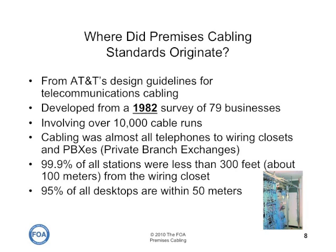Standards for premises cabling were developed from a 1982 AT&T survey of a number of businesses. AT&T was interested in what was going to happen when they went from POTS — plain old telephone service, analog phones — to digital private branch exchanges and digital phones. In their survey, practically all of the stations were less than 300 feet from the wiring closet, and 95% of all desktops were within 50 meters. This thus became the standards used for development of structured cabling.